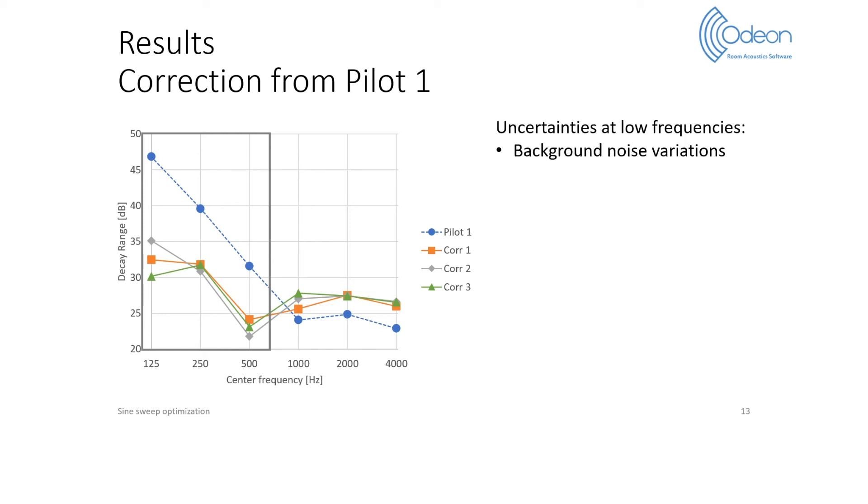The first issue is that the background noise may vary during the measurement. In that case, the corrections no longer correspond to the measurement conditions. Secondly, the decay range is more difficult to estimate at low frequencies, partly because of octave filtering artifacts. And that is especially visible at 125 Hz, where the three corrections lead to different decay ranges.